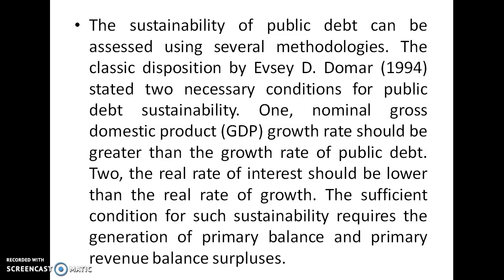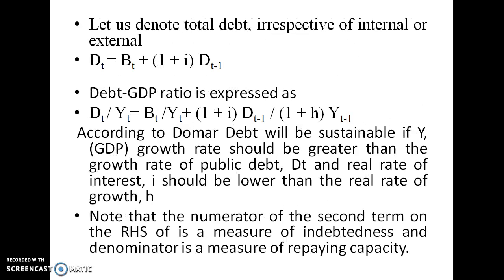Let us explain these two conditions with the help of a mathematical equation. Let us denote the total debt, irrespective of internal or external, by a single term DT, which shows the overall debt position of a country. DT equals Bt plus (1 + i) into DT minus 1, where Bt is the primary deficit or current obligation, and (1 + i) into DT minus 1 shows all past debt up to the previous year. Thus DT, the current overall debt position, equals the current primary deficit plus the effect of overall past debt.